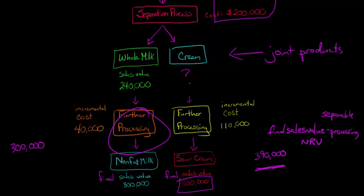Right here, to making that nonfat milk, we can separate these costs out and say, this $40,000 really just has to do with the nonfat milk. So we're going to separate that out. We're going to deduct it from the final sales value. That gives us $260,000 as the NRV for the nonfat milk, and then we have the $390,000 as the NRV for the sour cream.